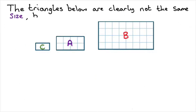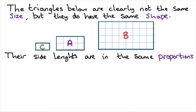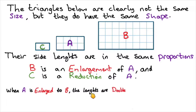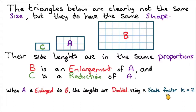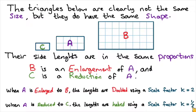Let's consider an example. The triangles below are clearly not the same size but they do have the same shape — their side lengths are in the same proportions. So B is an enlargement of A and C is a reduction of A. When A is enlarged to B, the lengths are doubled using a scale factor of K equals 2. K is just a constant of proportionality, also referred to as the scale factor. When A is reduced to C, the lengths are halved using a scale factor K equal to one half.